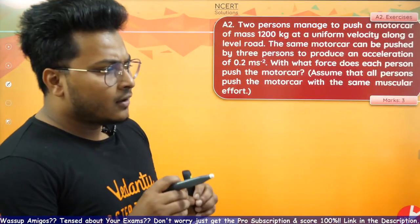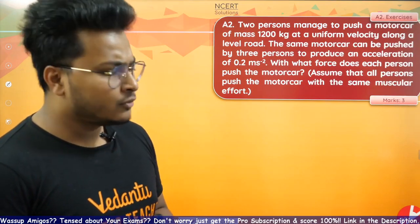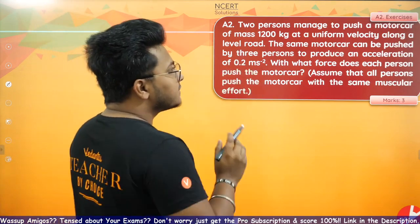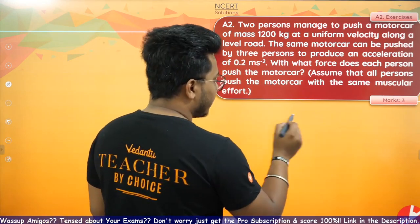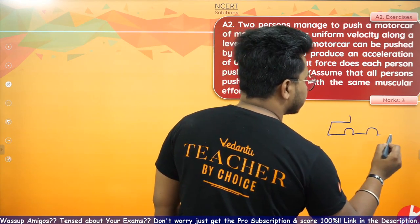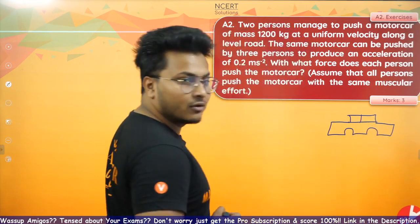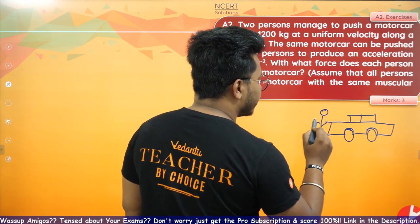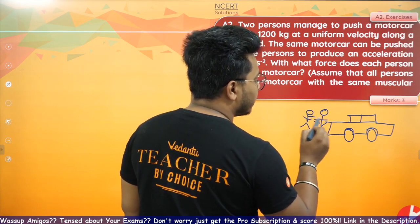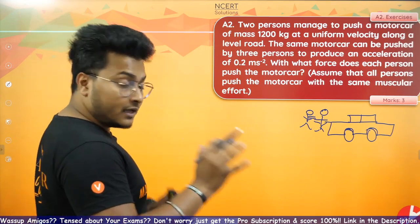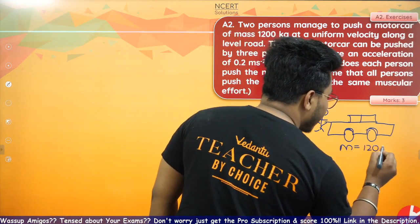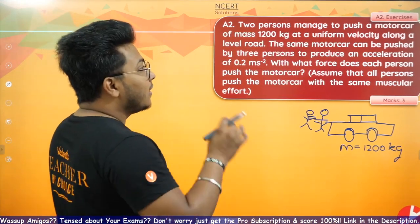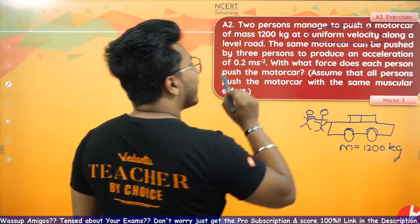Moving on to the second question for today — I personally love this question, it's a super amazing concept. Two persons manage to push a motor car. Imagine there is a car here — say it looks like a Lamborghini. There are two people pushing the car, and the mass of the car is 1,200 kg. They are pushing it at a uniform velocity along a level road.